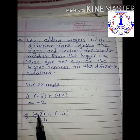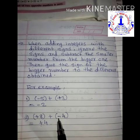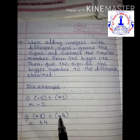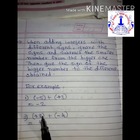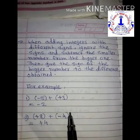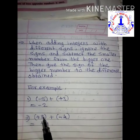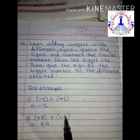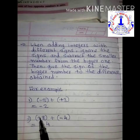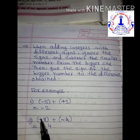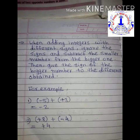Next example: plus 8 plus minus 4. Again, plus 8 and minus 4 have different signs — one is positive, one is negative. Ignore the signs and subtract the smaller from the bigger. Smaller number is 4, bigger is 8, so 8 minus 4 is 4. Give the sign of the bigger number, which is positive. So the answer is positive 4.